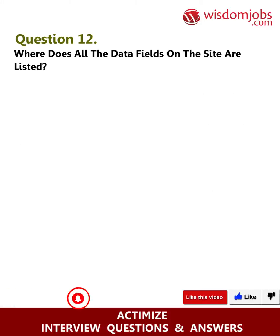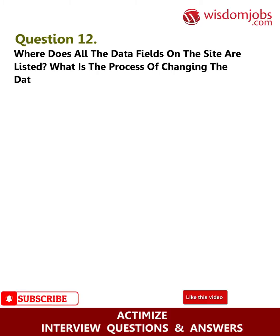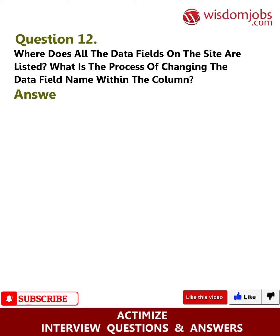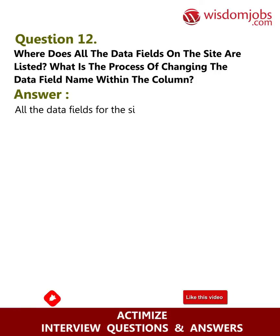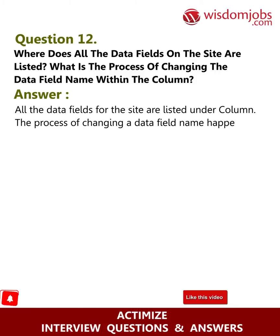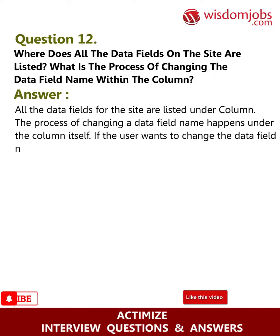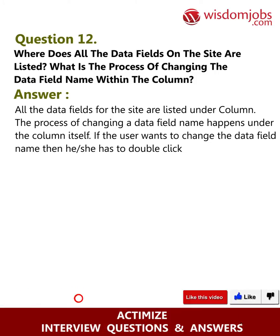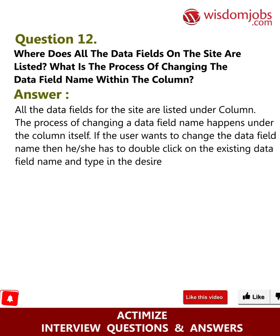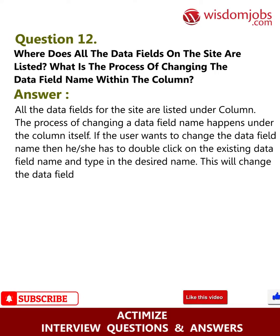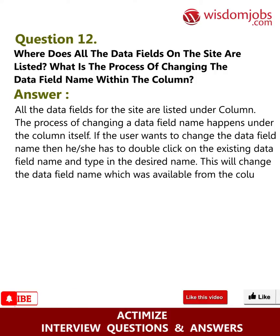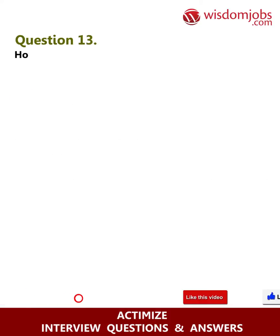Question 12: Where are all the data fields listed, and what is the process of changing the data field name within the column? Answer: All the data fields for the site are listed under the column. To change a data field name, the user has to double-click on the existing data field name and type in the desired name. This will change the data field name within the column.